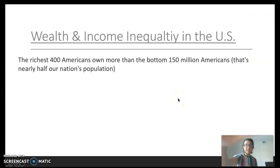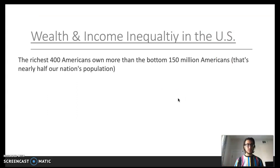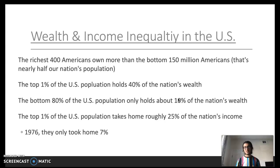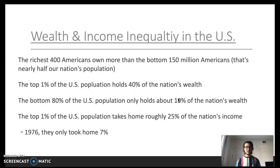Wow — a lot of information to take in. To quickly summarize: the richest 400 Americans own more than the bottom 150 million Americans — nearly half of our nation's population. The top 1% of the U.S. holds 40% of our nation's wealth, while the bottom 80% holds only about 10%. This problem has gotten increasingly bad over the past several decades: the top 1% now makes about 25% of our nation's income, but about 50 years ago they only made 7%. In the next video, we'll further discuss the complications of this distribution of wealth and take a look at social mobility.